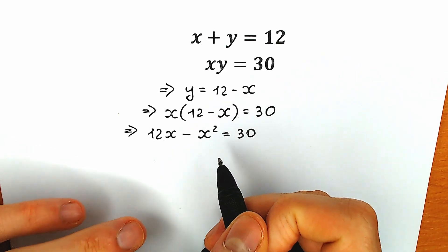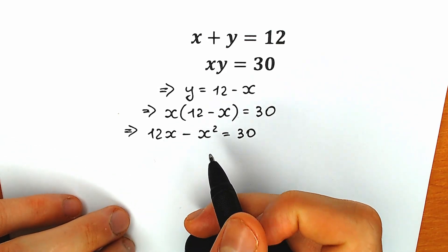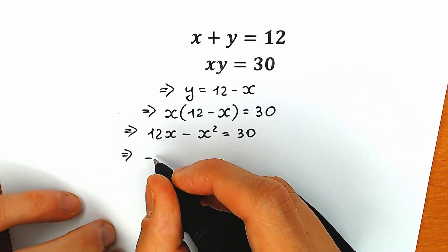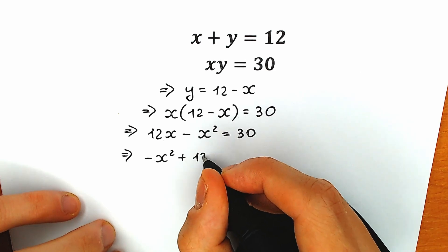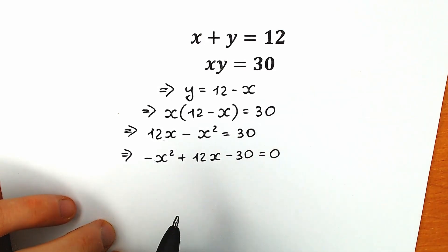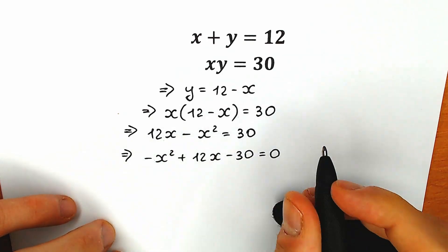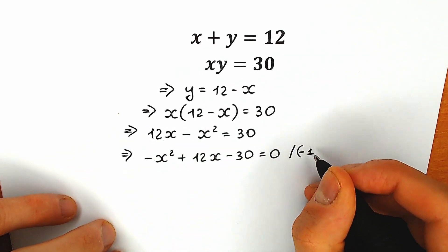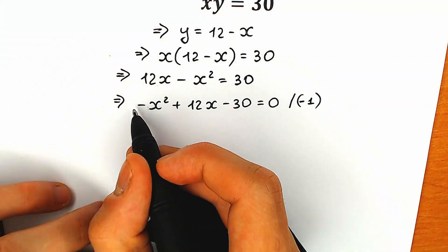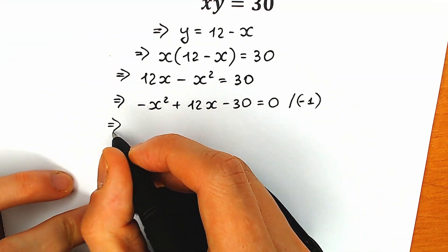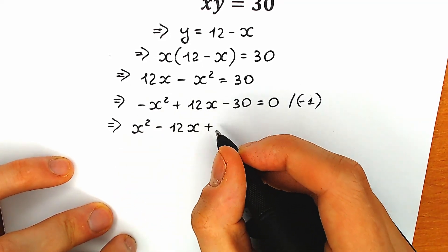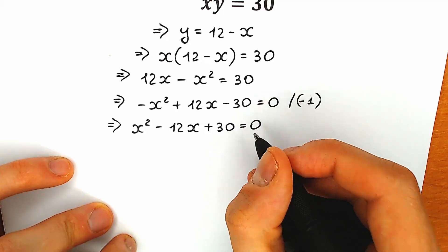This is a quadratic equation — we have x squared, x, and a constant. We prefer a standard order, so we rearrange to: minus x squared plus 12x minus 30 equals zero. Then let's multiply both sides by minus one, because we don't like the negative leading sign. So we get x squared minus 12x plus 30 equals zero.